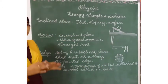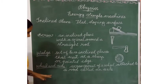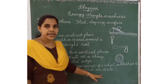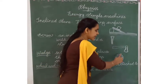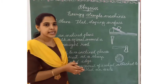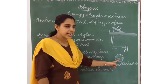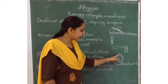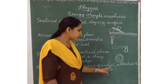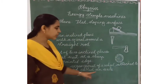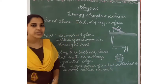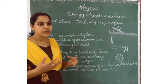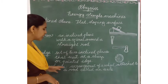Next is Wheel and Axle. It is an arrangement of a wheel attached to a rod called an axle. Examples include tires and the steering wheel in a car. In the middle of the wheel, there is a rod called the axle. Wheel and axle examples can be found in tires, steering wheels of cars, two-wheelers, and four-wheelers.